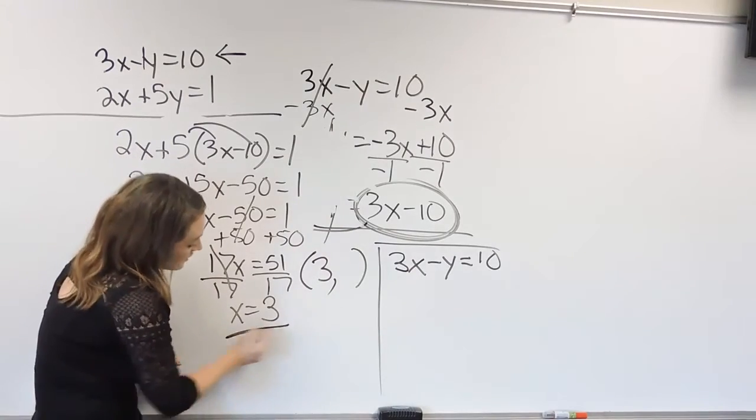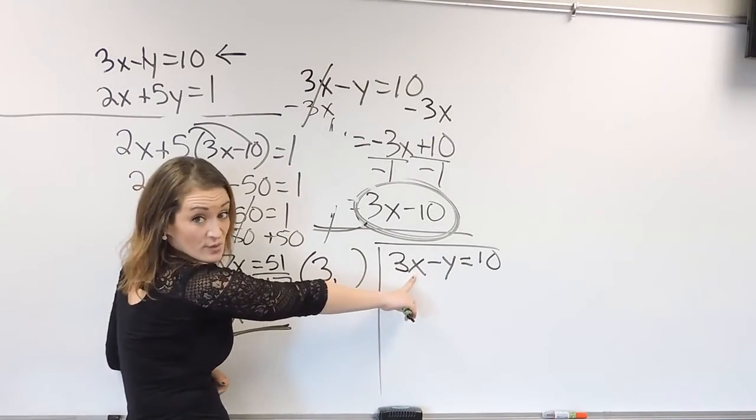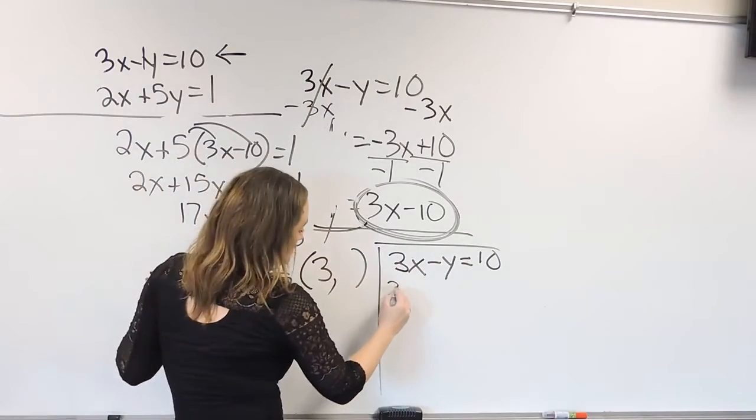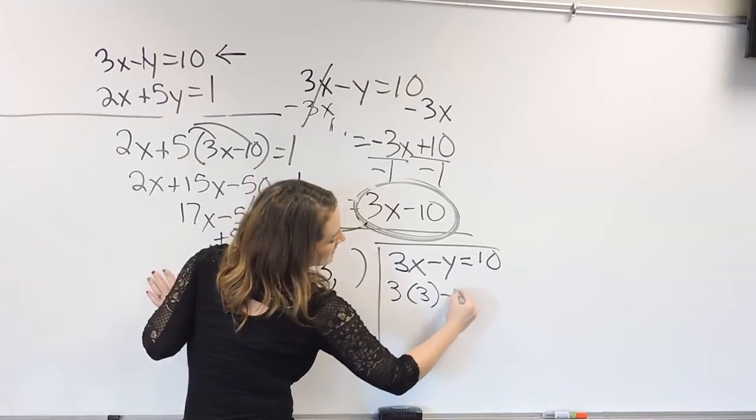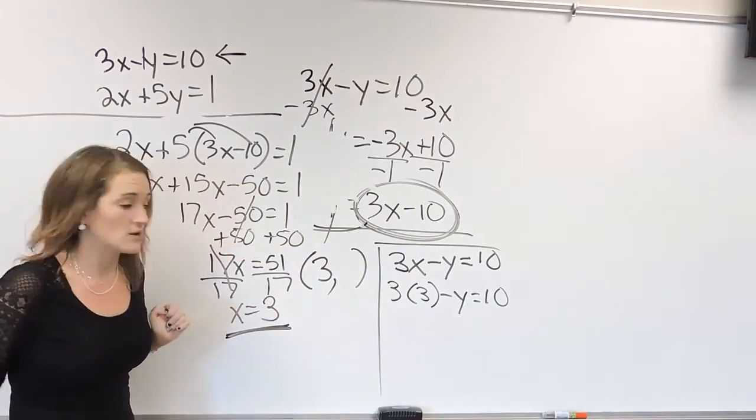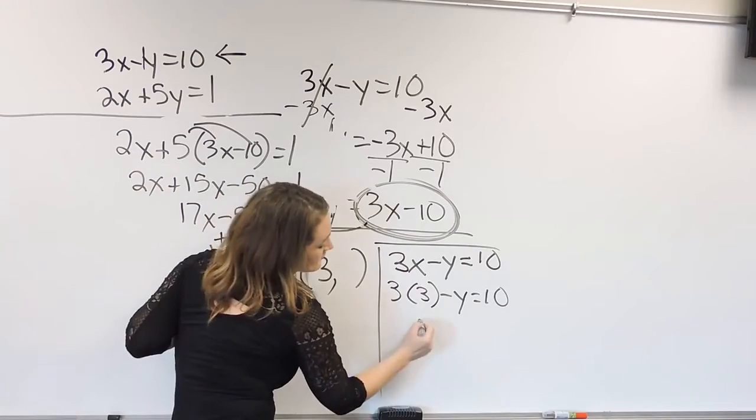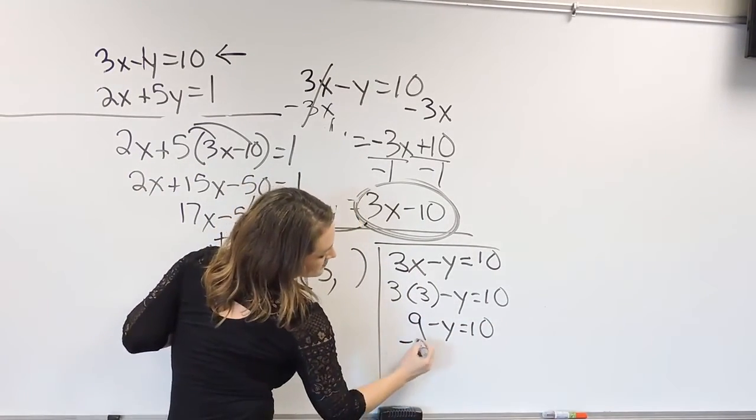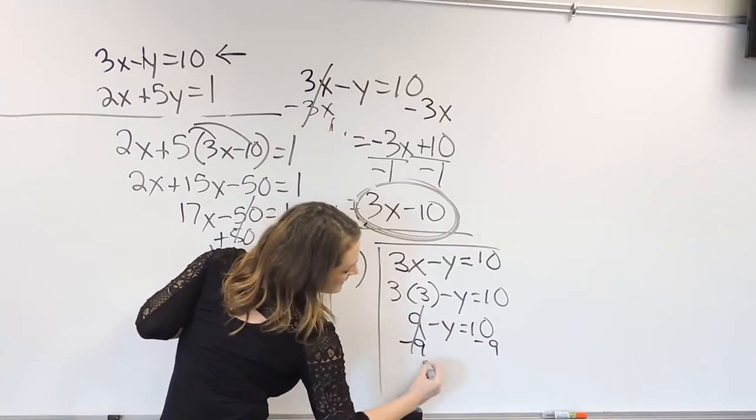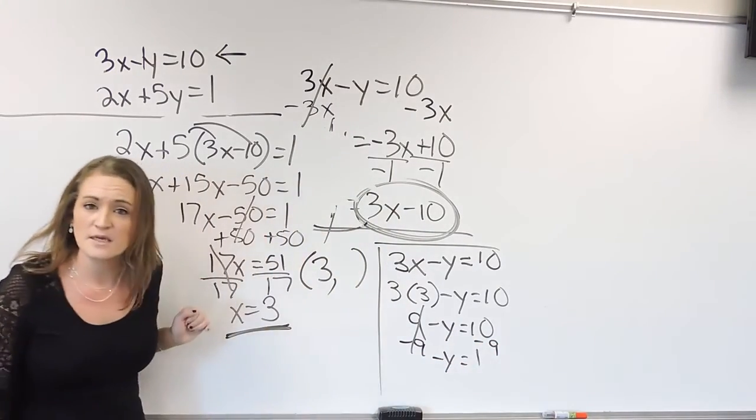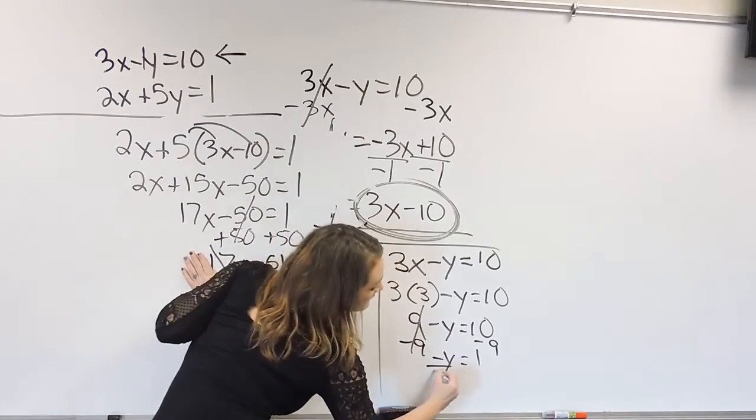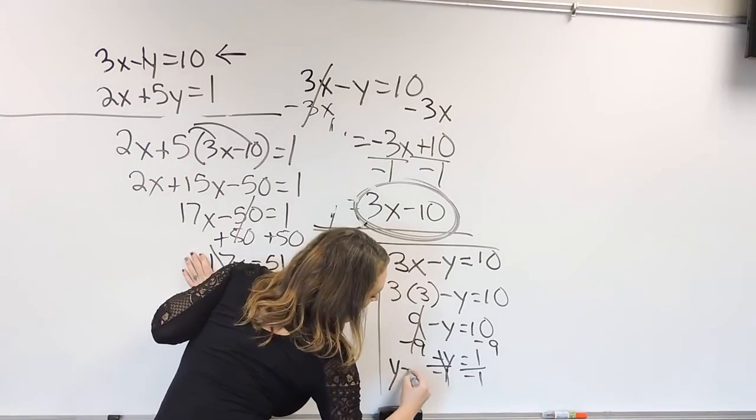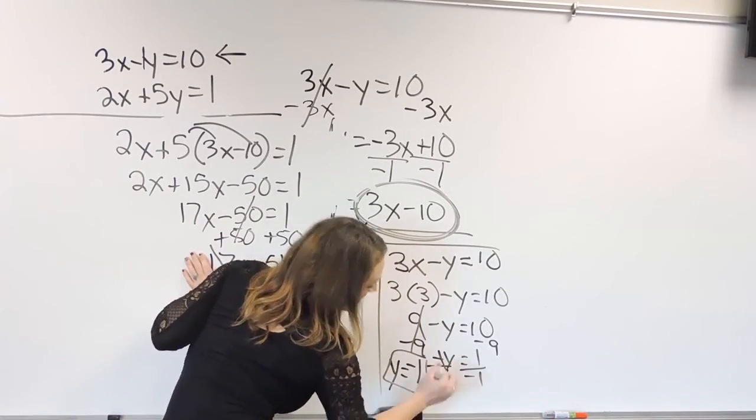And if x equals 3, that means I can plug in the 3 for x and solve for the y and figure out that missing value. So I'm going to plug in the 3 for the x and I'm going to solve this equation now. So 3 times 3 is 9. 9 minus y is equal to this 10 here. Subtract 9 on both sides and we have negative y is equal to a 1. And then last step there, divide out that negative. So divide both sides by negative 1 and we get that y is equal to a negative 1 there.